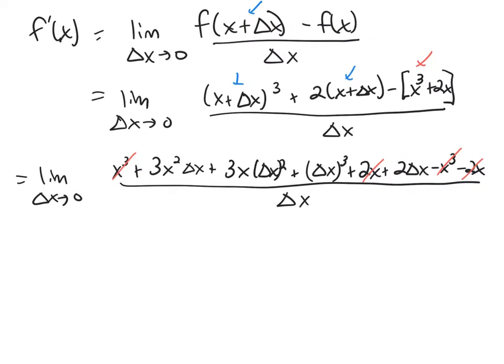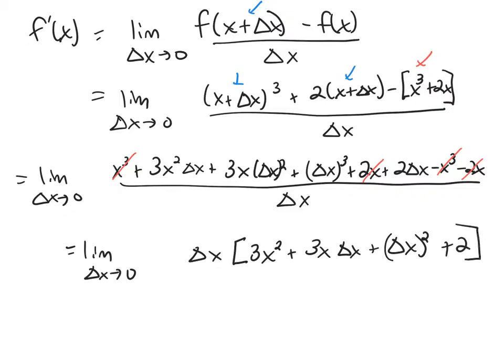So if you look, everything in the numerator has a delta x in it. So I'm going to pull out a delta x. What am I going to be left with? 3x squared, 3x delta x plus delta x squared plus 2 divided by delta x. Now the delta x's will cancel.